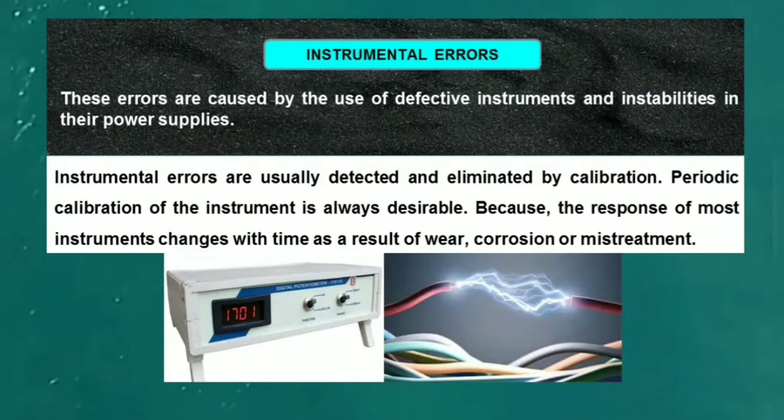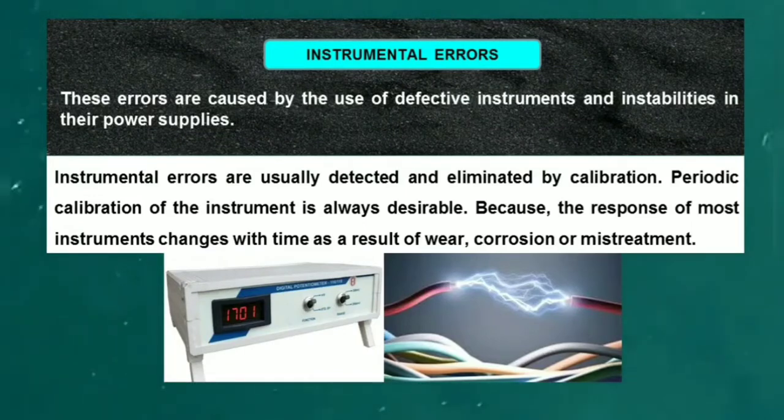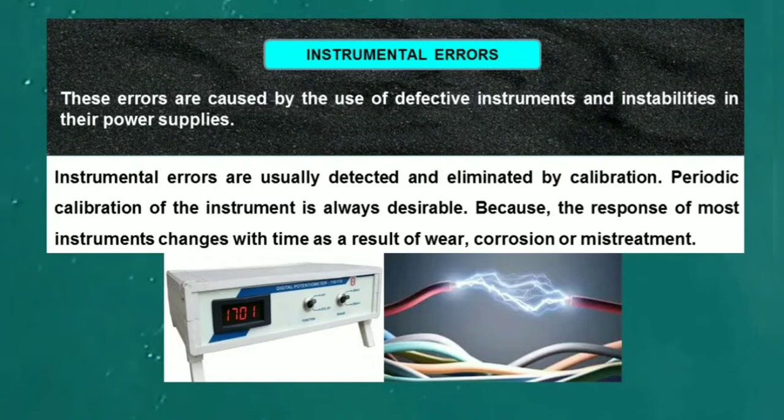Instrumental errors: These errors are caused by the use of defective instruments and instabilities in their power supplies. These errors are usually detected and eliminated by calibration. Periodic calibration of the instrument is always desirable because the response of most instruments like potentiometer and conductometer changes with time as a result of wear, corrosion, or mistreatment.